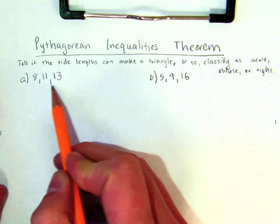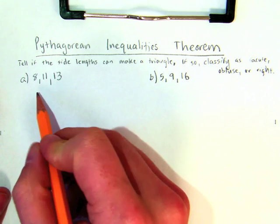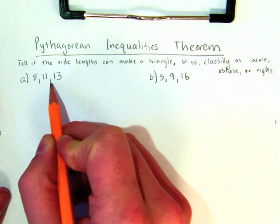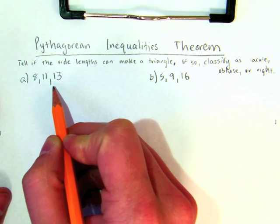So first off, can these make a triangle? Well, very simply, what I need to make sure is, can any two sides of this triangle add up and be greater than the third side? Because that's what's necessary for it to be a triangle.